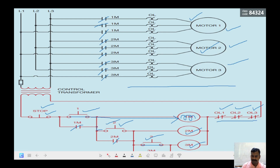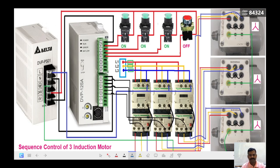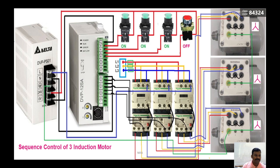This is the wiring diagram for the above control circuit and power circuit. We have the PLC here — this is the power unit, the PLC CPU — and the switching elements are connected to the PLC input card and the contactors are connected to the PLC output card. Since the PLC output card cannot directly drive the motors, we have the contactors here, and the contactor coils are driven by the PLC output card.